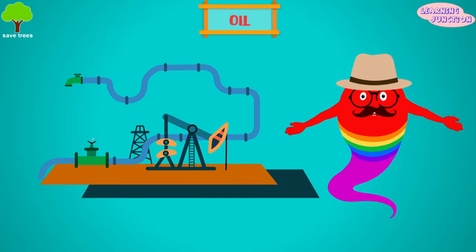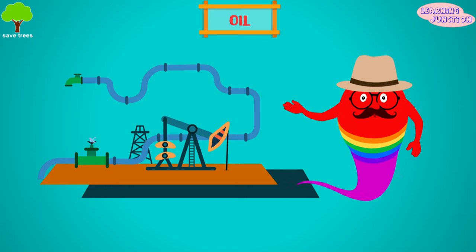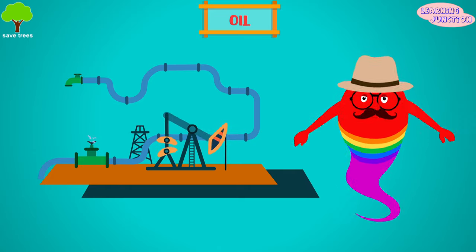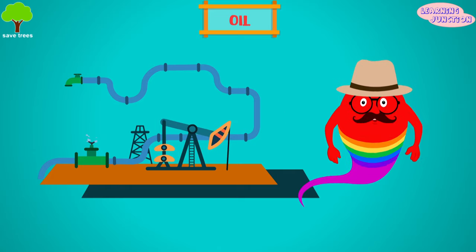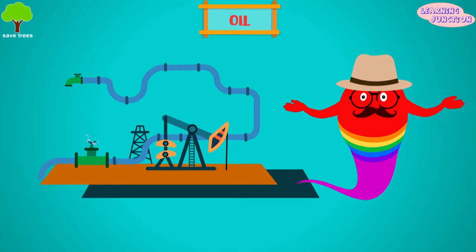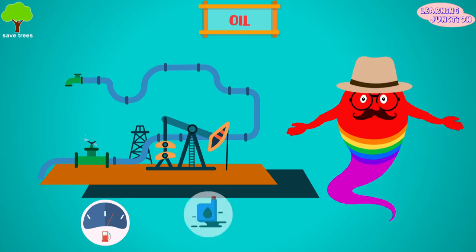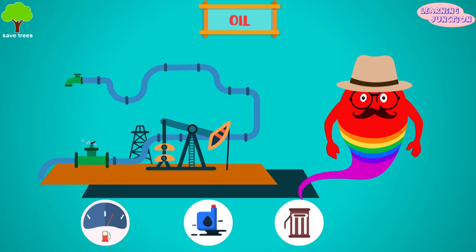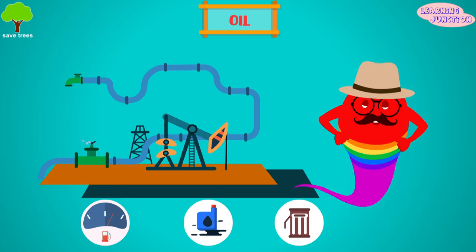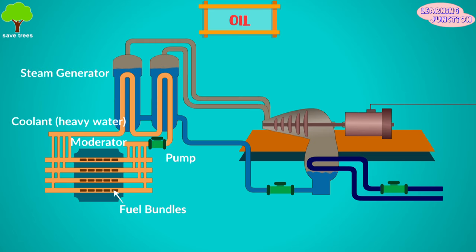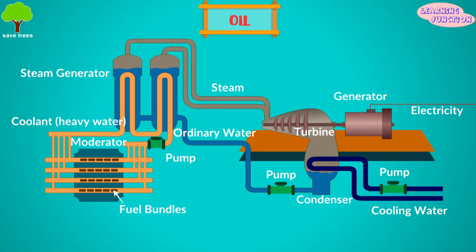It is carried in pipelines and large tanker ships. A refinery changes the raw oil into various products like gasoline, diesel fuel and jet fuel. It's also burned in power plants for electricity production. The oil is burned, which produces gases that turn a turbine to create electricity.